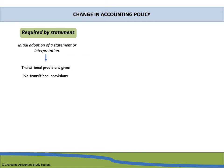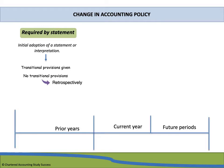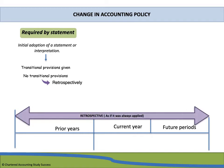When there are no transitional provisions, the change must be accounted for retrospectively. Retrospectively means it is as if the company has always applied the new accounting policy, so the entity will need to go into prior years and make adjustments to the accounting figures. On our timeline we have prior years, current year, and future periods — retrospectively means we need to adjust for the current and prior years.